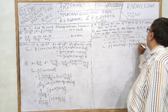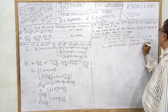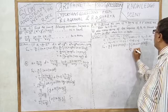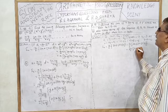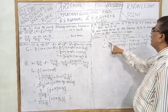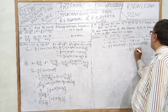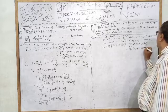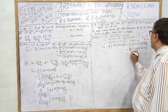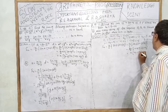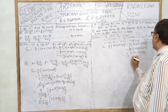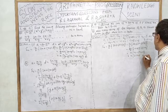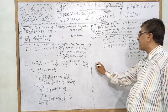Substituting values: Sₙ = n/2 × [-2 + (-6)(n-1)] = n/2 × [-2 - 6n + 6] = n/2 × [4 - 6n]. Wait, simplifying: n/2 × [-2 - 6n + 6] gives n/2 × [4 - 6n]. Further: Sₙ = n(2 - 3n). So the sum of n terms is n(2 - 3n).